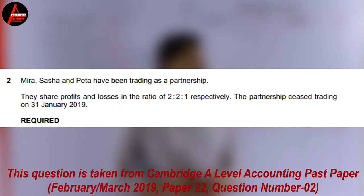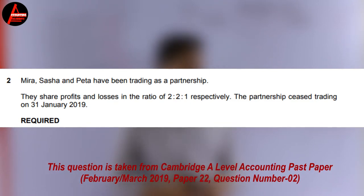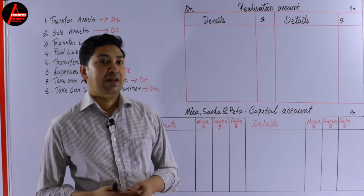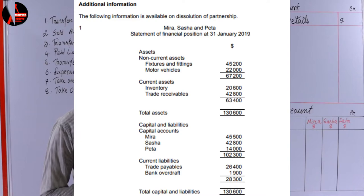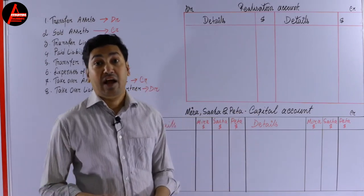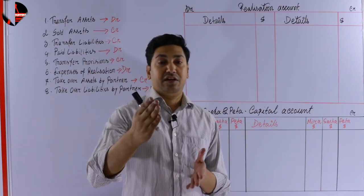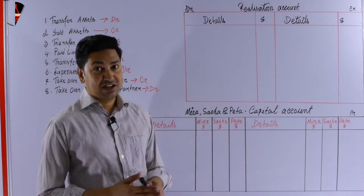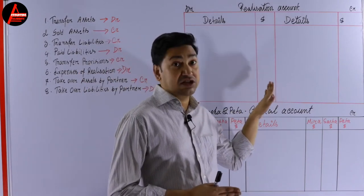Here is the question: Mira, Sasa, and Pita have been trading as a partnership. They shared profits and losses in the ratio of 2:2:1 respectively. The partnership ceased trading on 31st January 2019. The following information is available on dissolution of partnership. We have a statement of financial position, also called a balance sheet. From this balance sheet we have to prepare the realization account, then the capital and bank account.